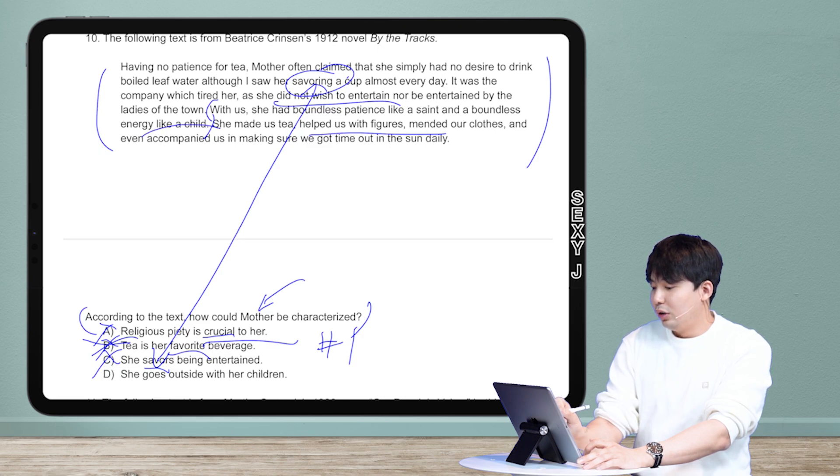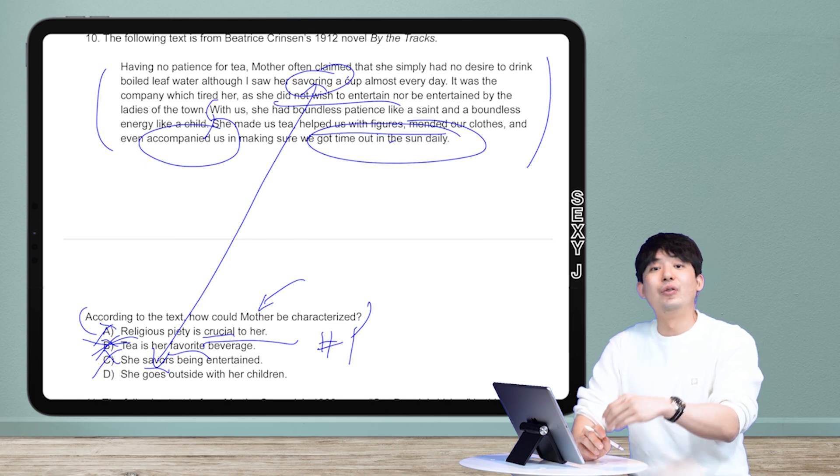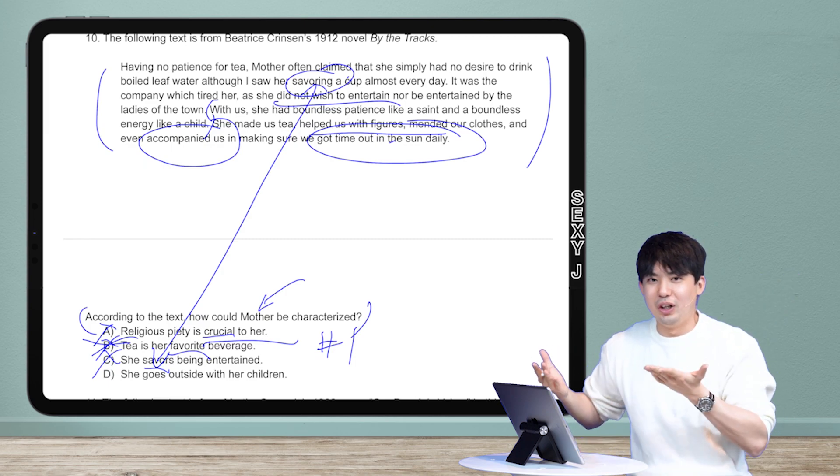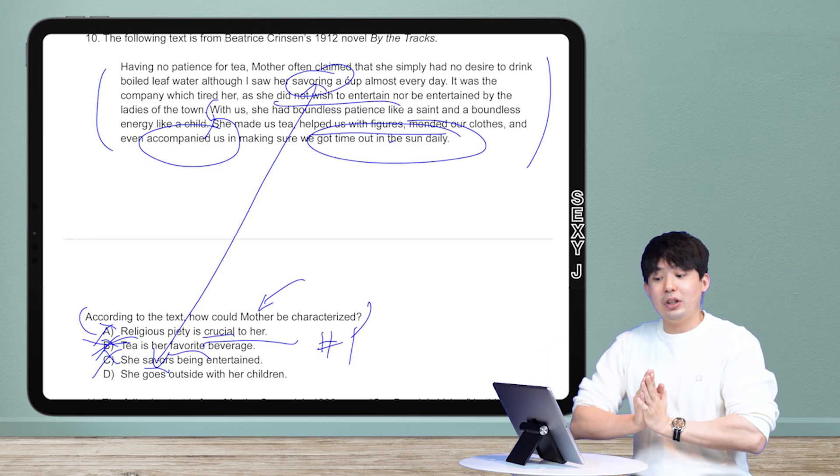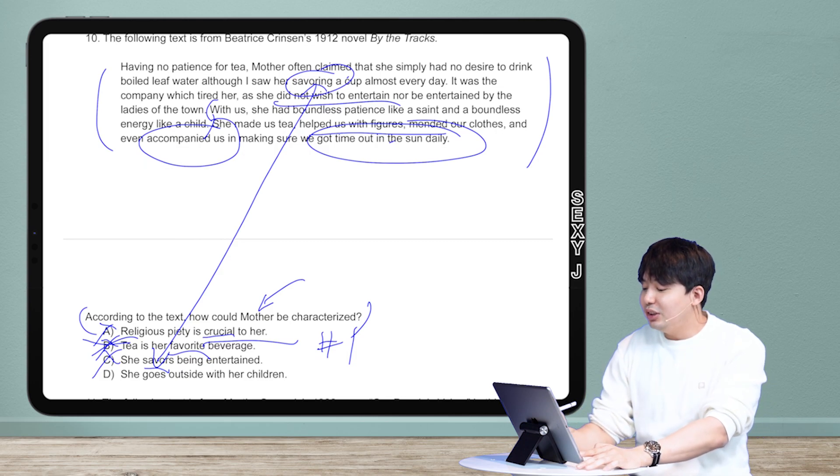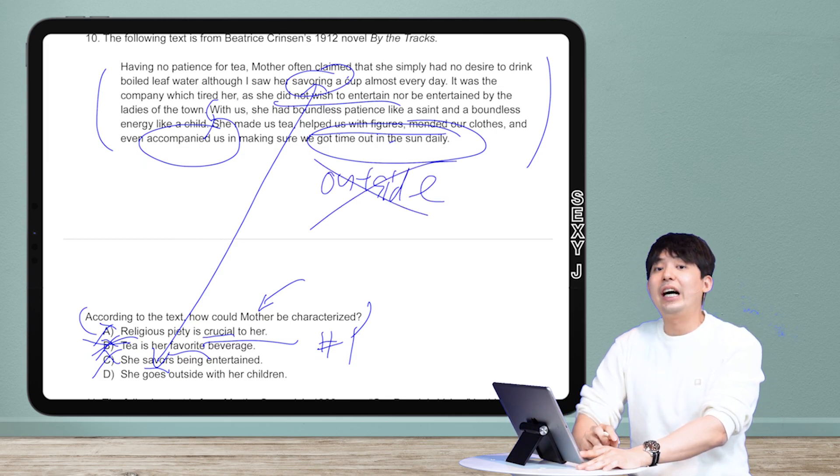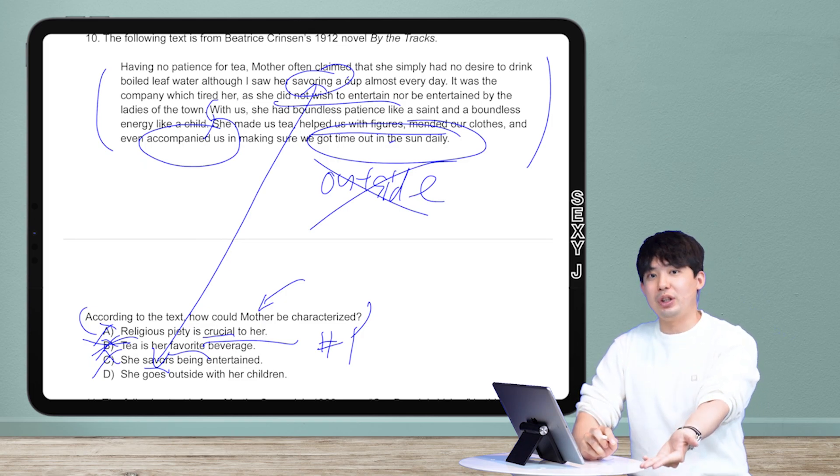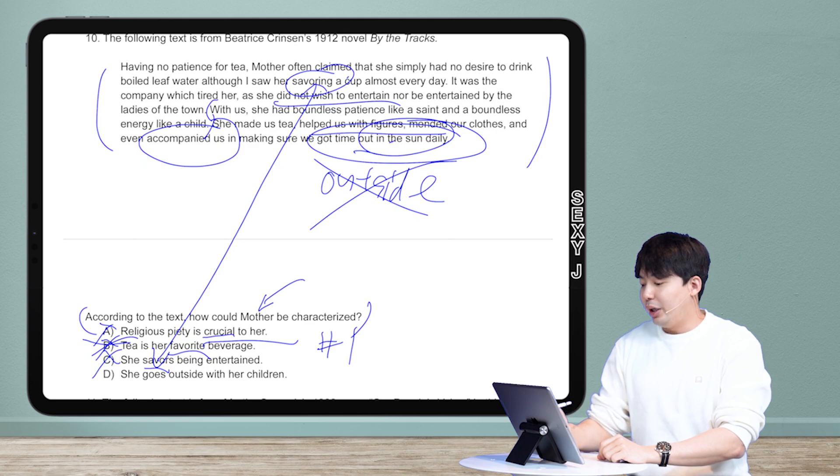Mended our clothes and even accompanied us in making sure we got our time out in the sun daily. So accompanied us, got time out in the sun. That is in regular language what? She went outside with us. Because guys, the sun's outside. The sun is not inside. So this is a very very good answer for the SAT because it doesn't say the word outside in the passage. It's not there. It has to be inferred, reasonably inferred or paraphrased from what was in the text which was out in the sun. So out in the sun becomes outside. So does she go outside? Yeah she does. She actually goes every day.